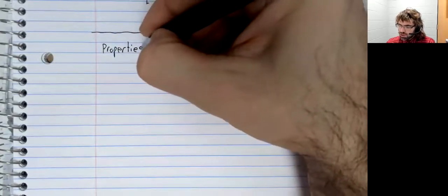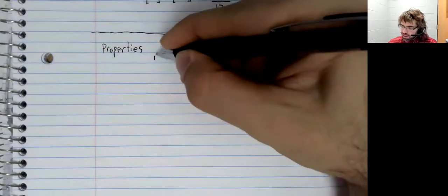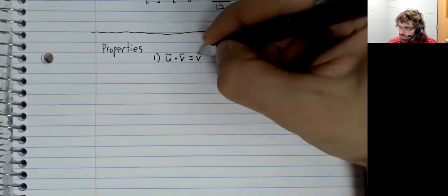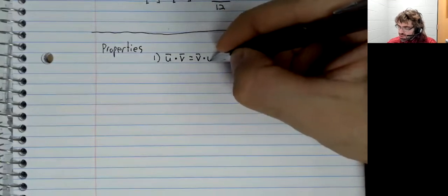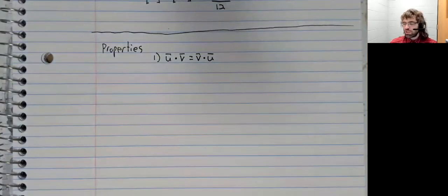The dot product does have some properties that we would expect multiplication to have. In fact, in a sense, it has better properties than matrix multiplication. We've seen one type of multiplication that isn't commutative, but the dot product is. U dot V equals V dot U.